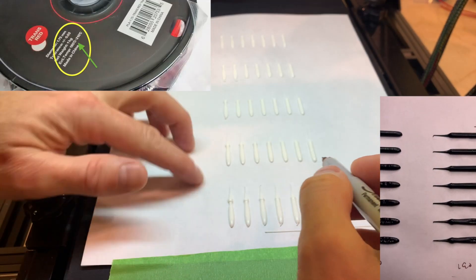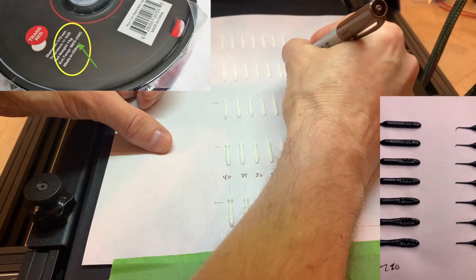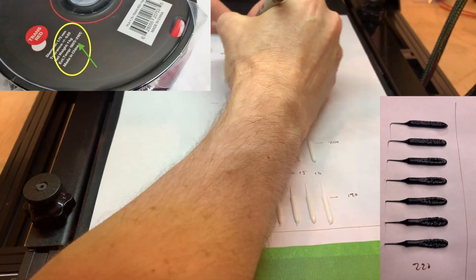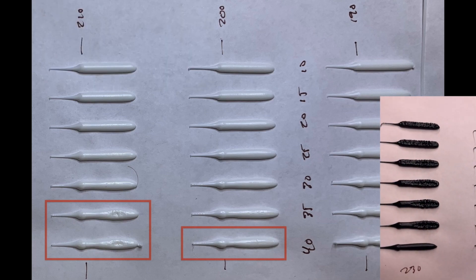My takeaways from this are the following. The temperature ratings on the spools are meaningful guides. Pushing extrusion rates can mimic higher temperatures, which can push you into a regime where filaments react poorly.